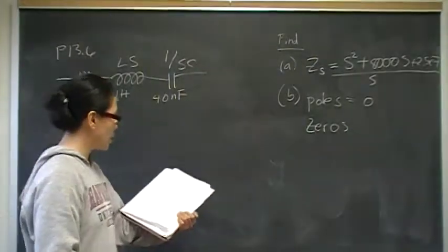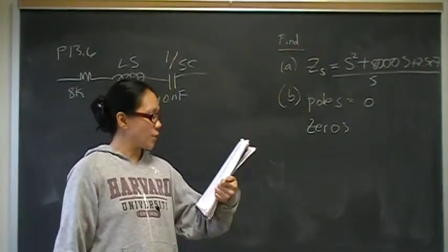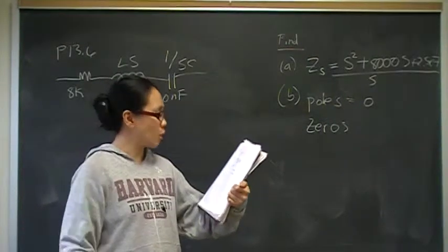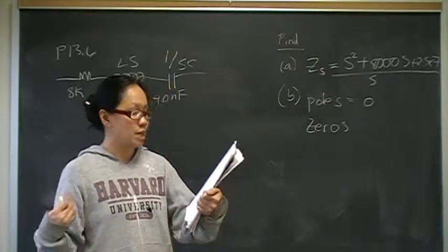The poles are the negative of that. It will give you 4,000 plus j 3,000, and 4,000 minus j 3,000. The poles will be negative 4,000 plus j 3,000 and negative 4,000 minus j 3,000.